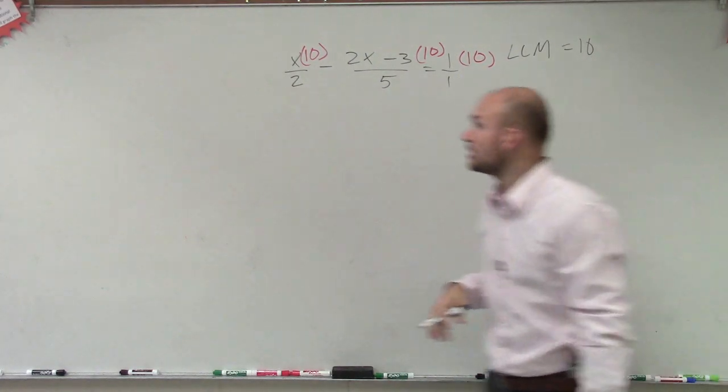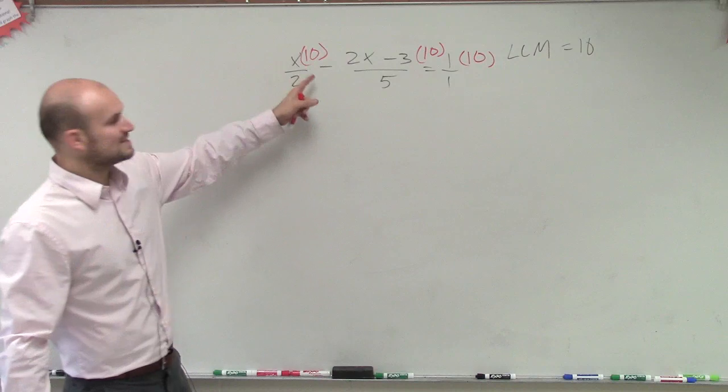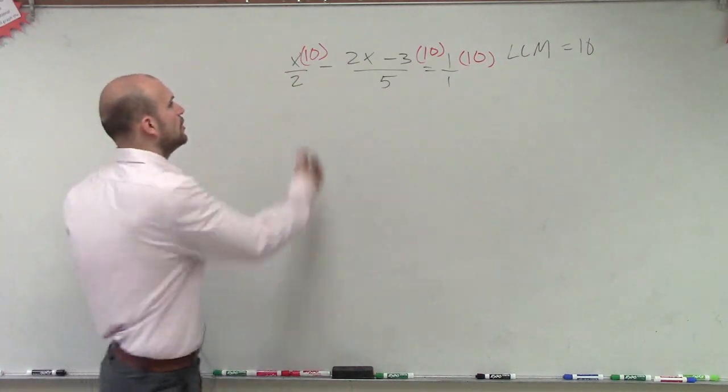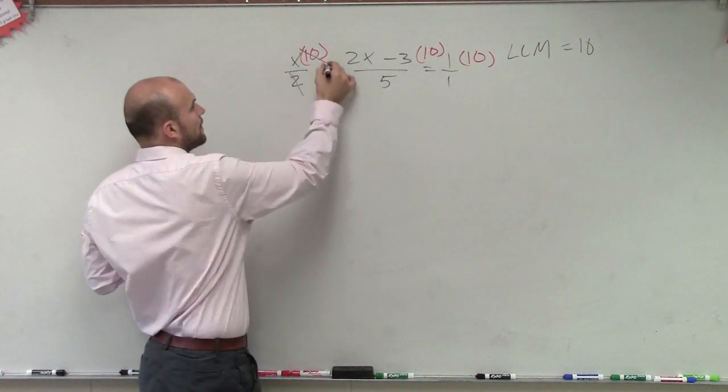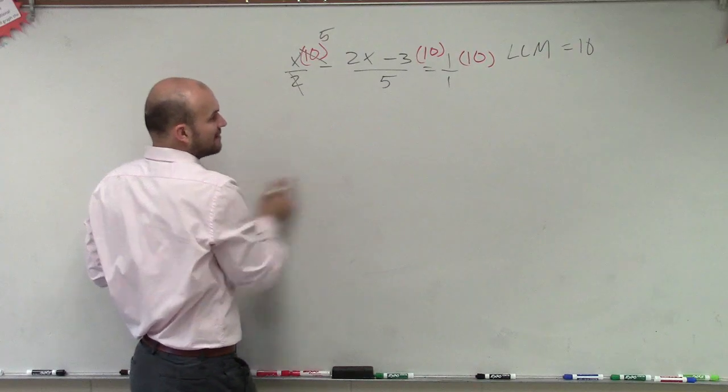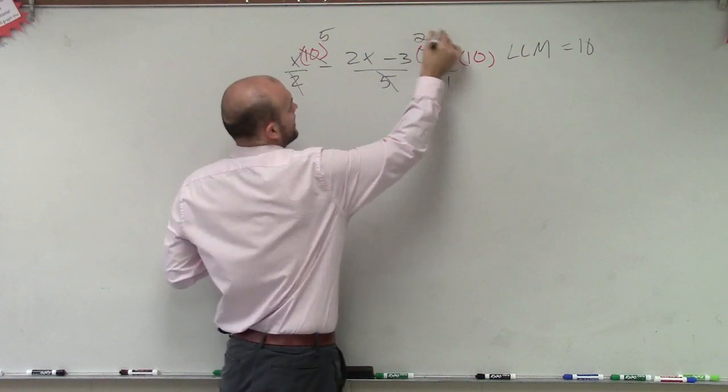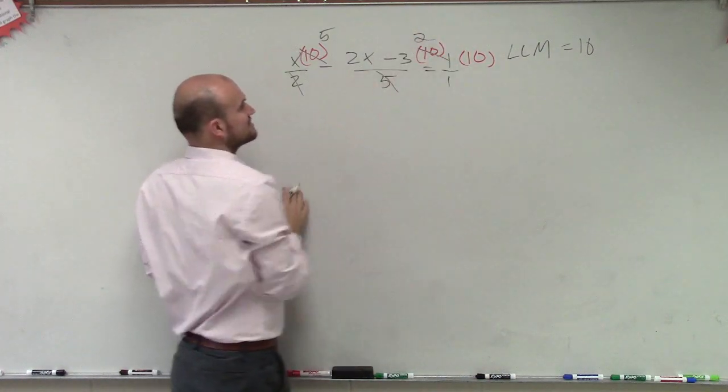So by multiplying every single term, you could multiply 10 times x then divide by 2, or you can also say that 10 divided by 2 now turns to 5, that goes to 2, and this becomes 10.